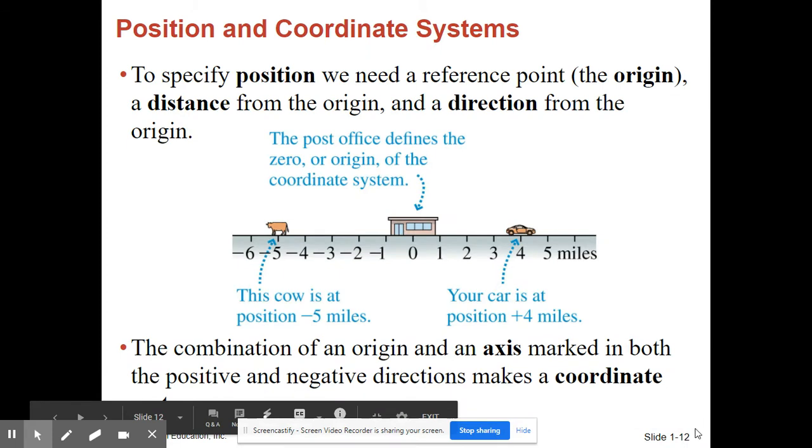Position and coordinate system. To specify position we need a reference point, the origin, a distance from the origin, and a direction from the origin. The combination of an origin and an axis marked in both the positive and negative directions makes a coordinate system.